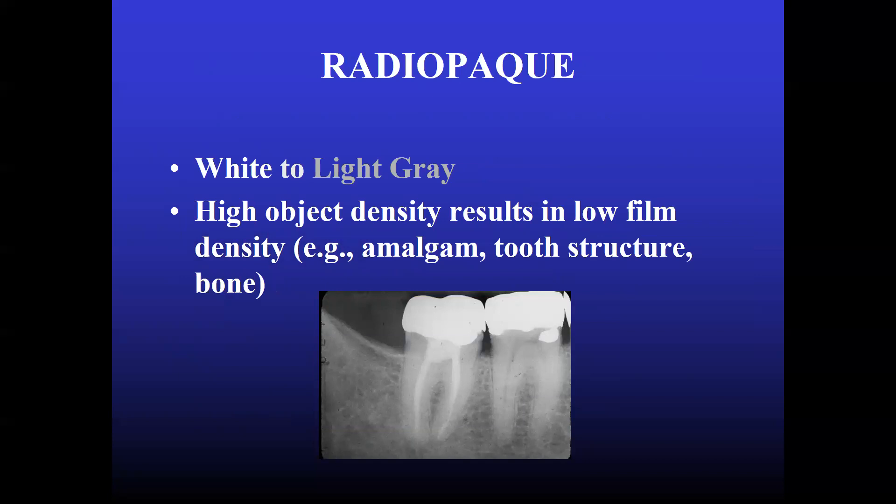So what is radiopaque? White to light gray. High object density results in low film density. That is, enamel, dentin, bone etc. Since the object is very dense, the film density is lesser. The film appears more lighter.